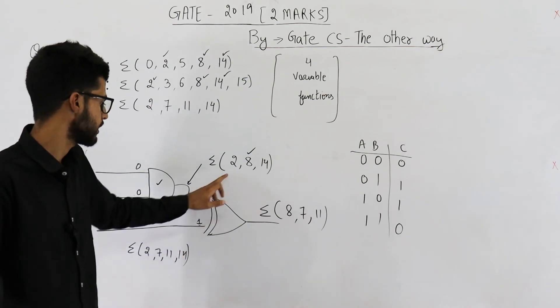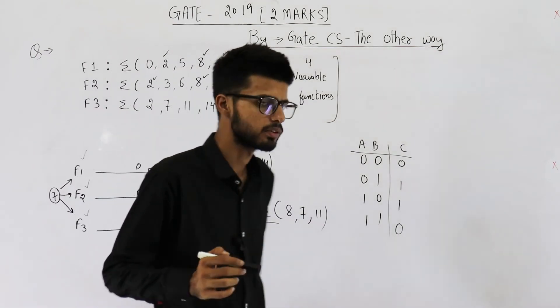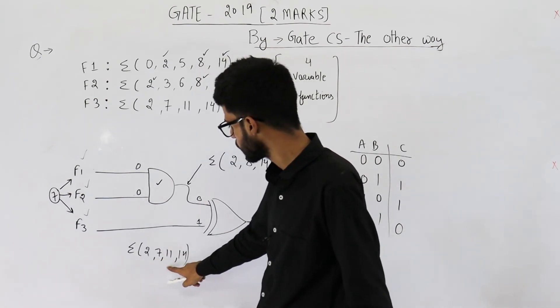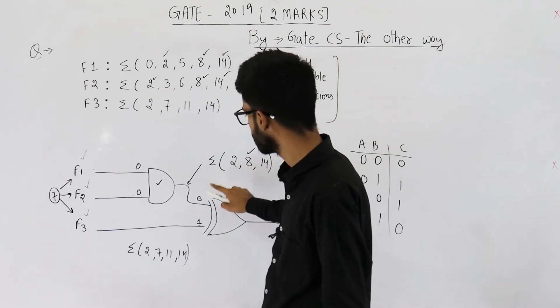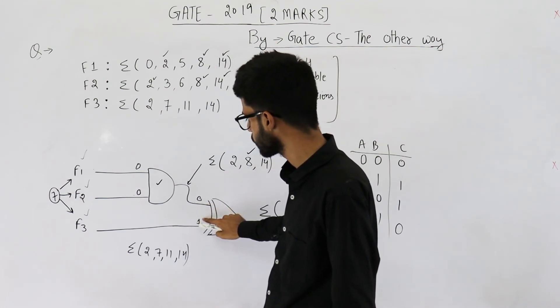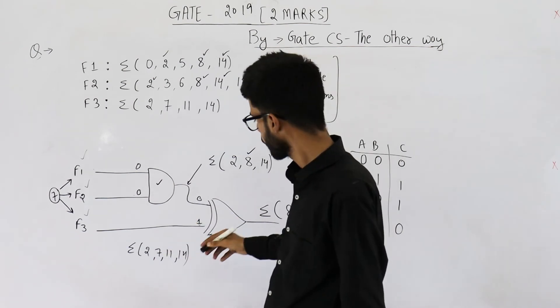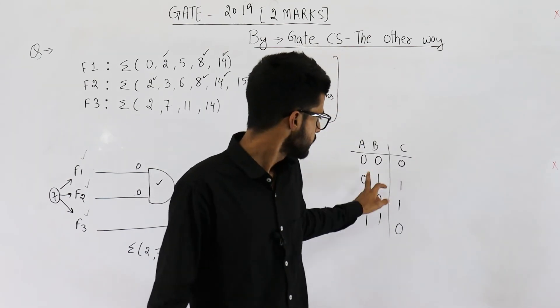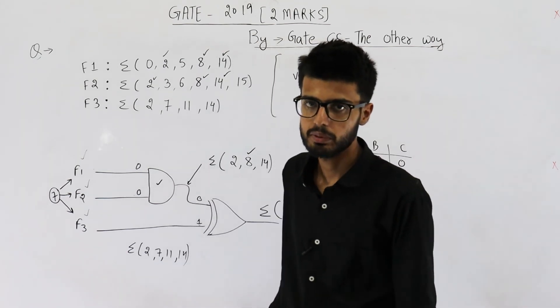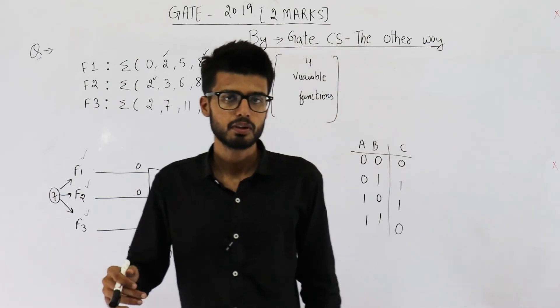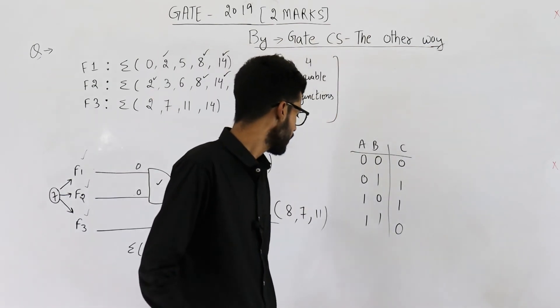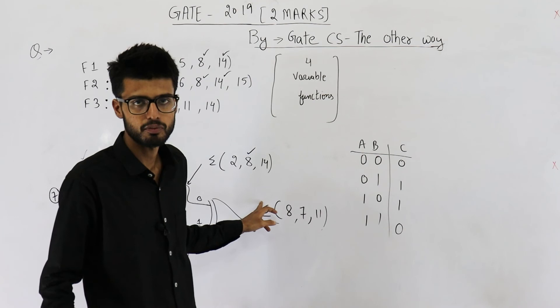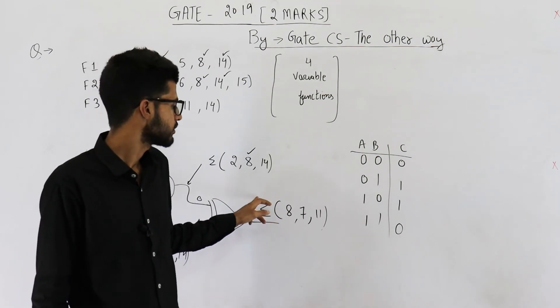What about the other numbers that are missing here? Let's consider one of those also. Say 6. 6 is not present in this as well as 6 is not present in this. That means both of the input functions will provide 0 on 6. So both of the lines will be 0 on 6, and you can see 0 XOR 0 is 0. So output will surely be low on 6, and output being low means that will not be included as a minterm in summation form or in the SOP form.